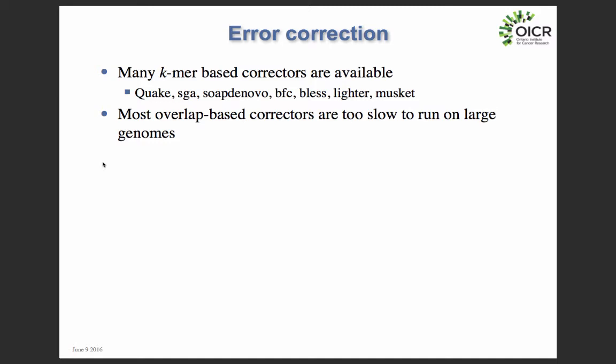An alternative way of doing error correction is finding overlaps between reads — finding where the end of one read matches the beginning of another, then calculating a consensus sequence. This works very well and can handle different types of errors, but it's typically too slow to run on very large genomes. If you sequence a human genome, you might have a billion reads, and finding overlapping pairs out of a billion reads takes a lot of compute time. So typically we use faster K-mer based error correction for very large genomes.